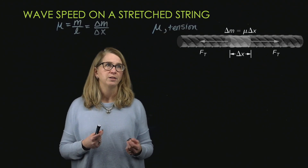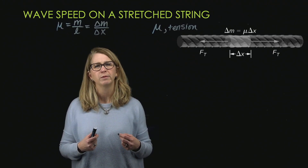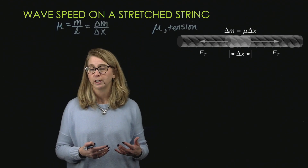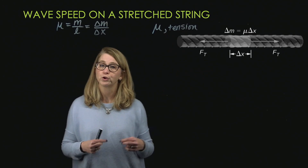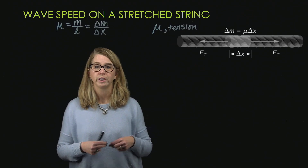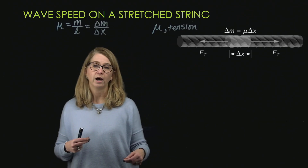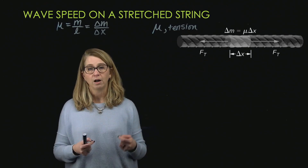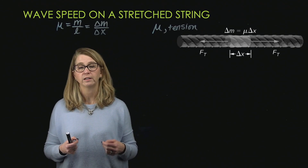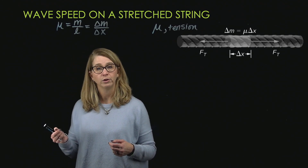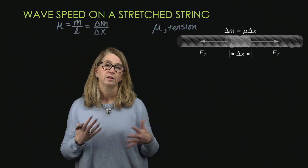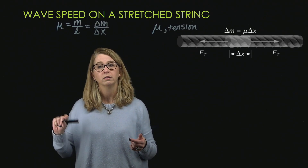The best way to understand that is to think about a stringed instrument like a guitar. If you've had a chance to look at a guitar, you might notice that the different strings have different thicknesses — the lower strings are thicker than the higher strings. And the other thing you can do to those strings to change the sound is to tighten them using the tuning pegs, to make them more tight or less tight.